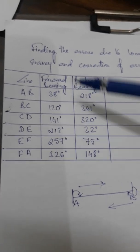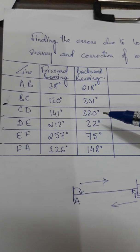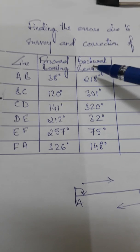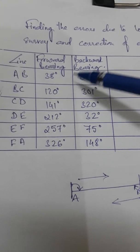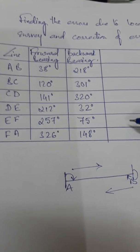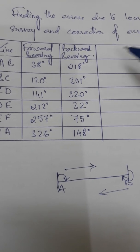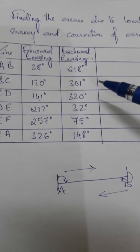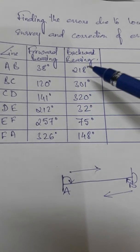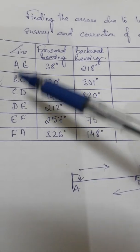For understanding the error, one thing we have to know is the rule: whenever we find the difference between the forward bearing and backward bearing, the difference should be 180 degrees. If the difference is 180, both bearings are correct. Whenever there is a deviation from 180 — either negative or positive — we consider that either the forward or backward bearing has some error.